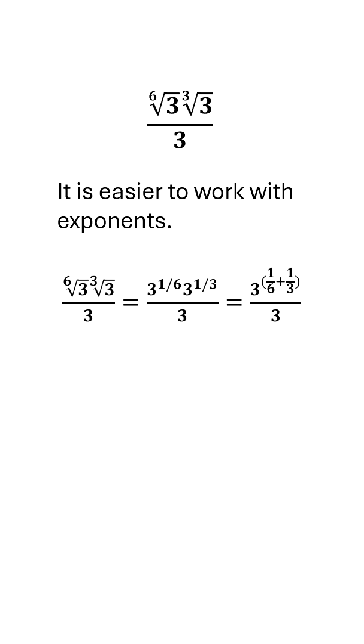Anyhow, 3 to the 1/6 times 3 to the 1/3 is 3 to the 1/6 plus 1/3. And so that's still over 3. We can't lose our denominator.